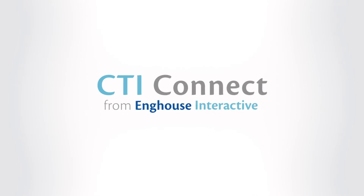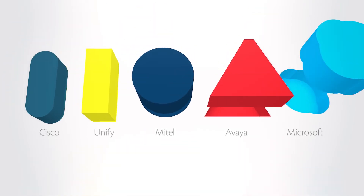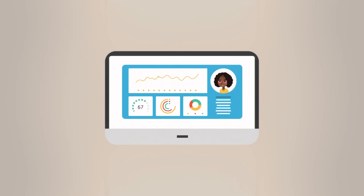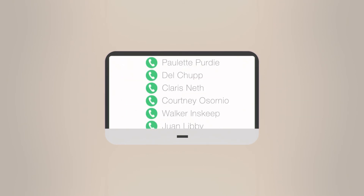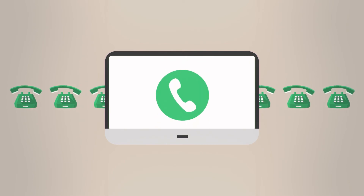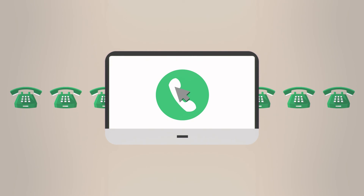Introducing CTI Connect — out-of-the-box implementation compatible with all major telephone systems. CTI Connect enables screen popping, instantly retrieving customer data and displaying it on an agent's desktop; click to dial, making calls with a single mouse click, improving efficiency and reducing time lost to misdialed numbers.